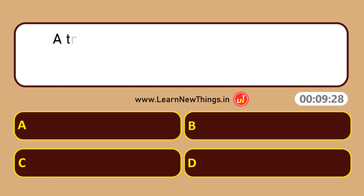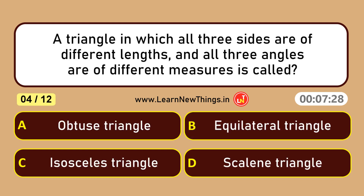A triangle in which all three sides are of different lengths and all three angles are of different measures is called a scalene triangle.